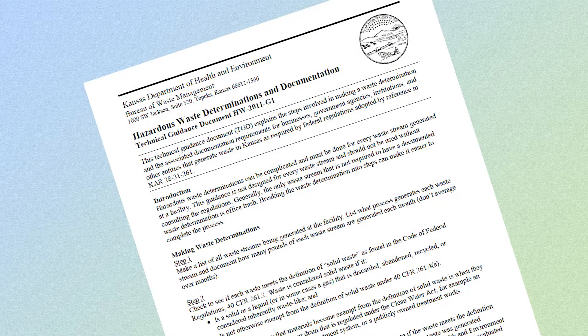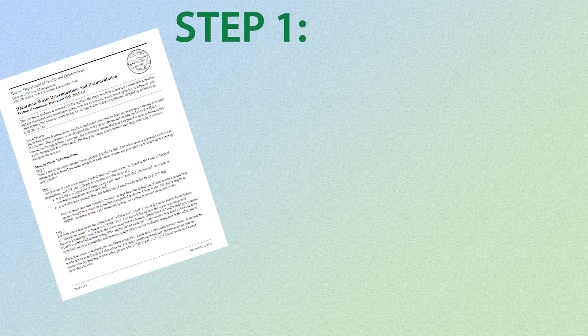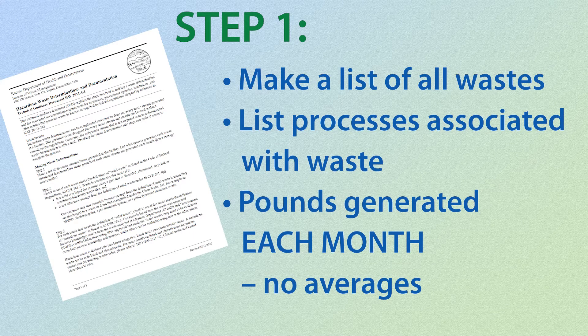How should a hazardous waste determination be documented? The Bureau of Waste Management recommends a four-step method. The first step is simply to list all of your waste streams generated at the facility, list which process is associated with the waste, and how many pounds of each waste are generated each month. You cannot use an average.